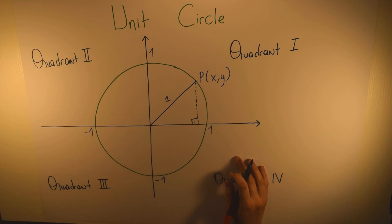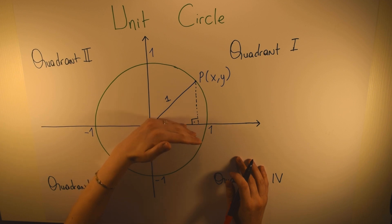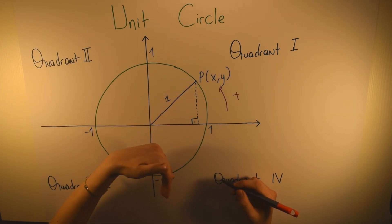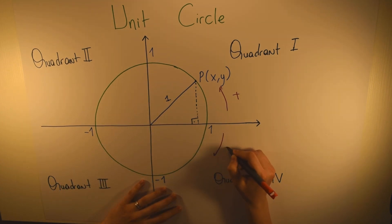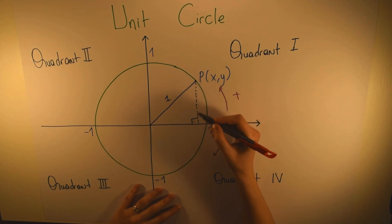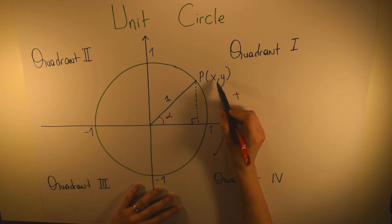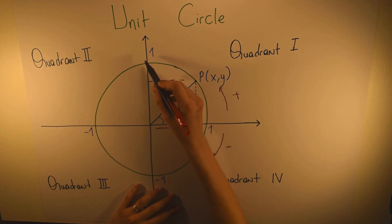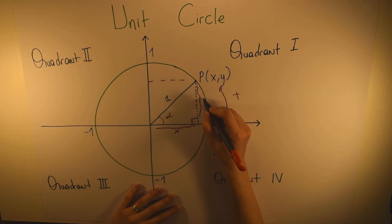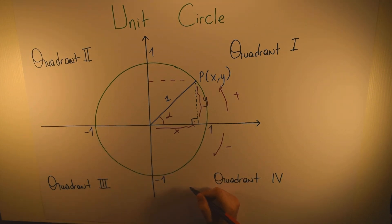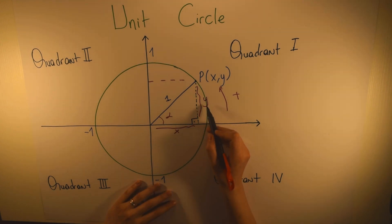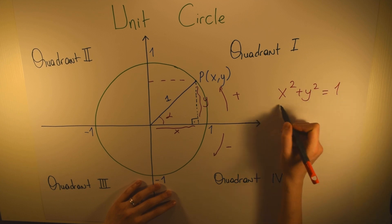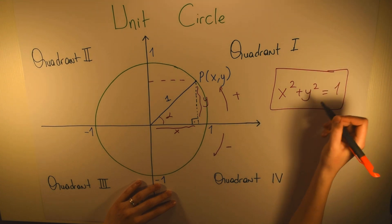A positive angle is made by a rotation in the counterclockwise direction, and a negative angle is made by a rotation in the clockwise direction. Looking at point P on the unit circle with angle alpha, x is the coordinate on the x-axis and y is the vertical length. As we know from right triangles, x² + y² = 1. This is the equation of the unit circle — you have to know this.